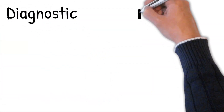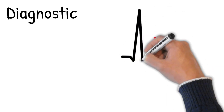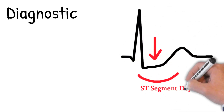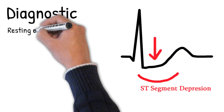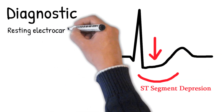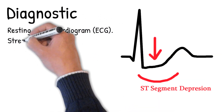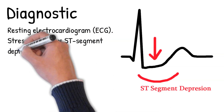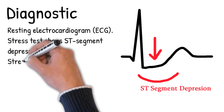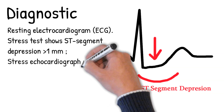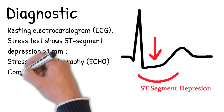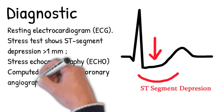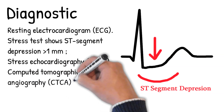Diagnostic tests for angina pectoris include: resting electrocardiogram (ECG); stress test, which shows ST segment depression greater than 1 mm; stress echocardiography (ECHO) or stress testing with myocardial perfusion imaging; computed tomography (CT) calcium scoring; and computed tomographic coronary angiography (CTCA), which is a confirmatory test.